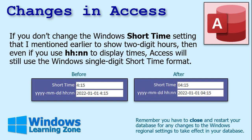Here's the thing with that short time setting I mentioned earlier — why I'm switching to the two-digit hour. If you don't change the Windows short time setting to show two-digit hours, then even if you use the HH:NN format to display times, Access will still use the Windows single-digit short time format.